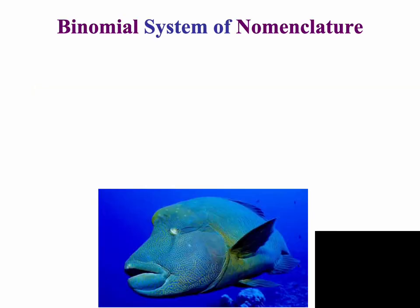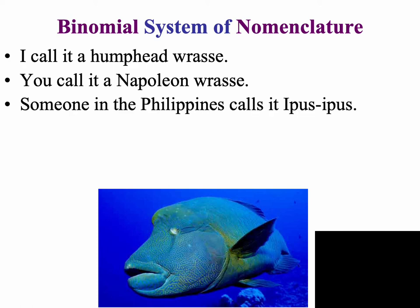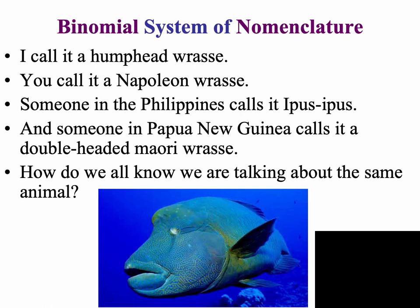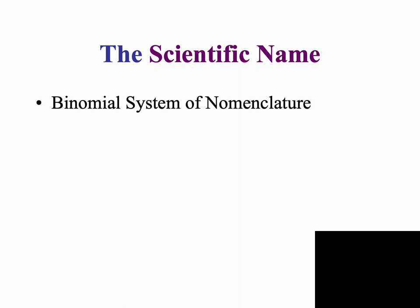Let's say you and I go on a scuba diving trip and see one of these fish. When we come up, I say I saw a humphead wrasse, you say you saw a Napoleon wrasse, someone else says they saw an ipocypus, and another person says they saw a double-headed Maori wrasse. We're all talking about the same thing — we know that because there is the scientific name, which follows the binomial system of nomenclature: a two-name system of naming organisms.